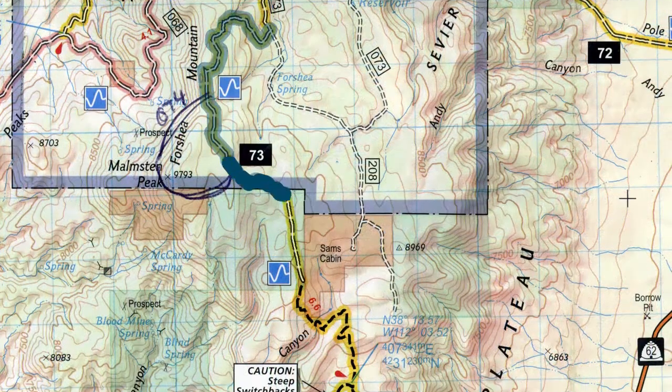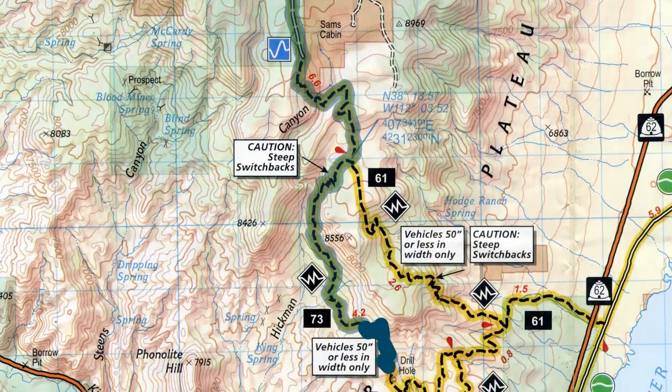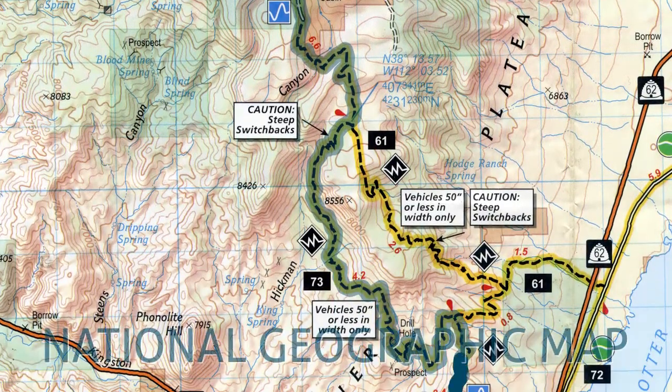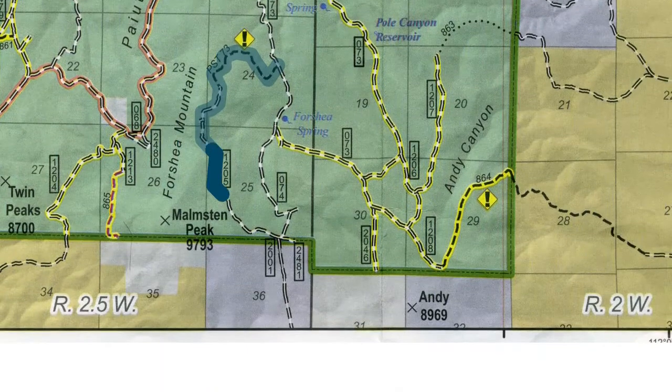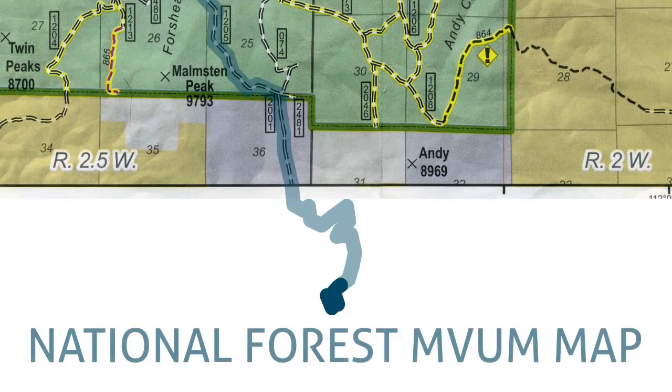Conversely, Paiute side trail 73, one of our favorites, is shown on the Nat Geo map but not on the National Forest map because it's just outside the forest boundaries.